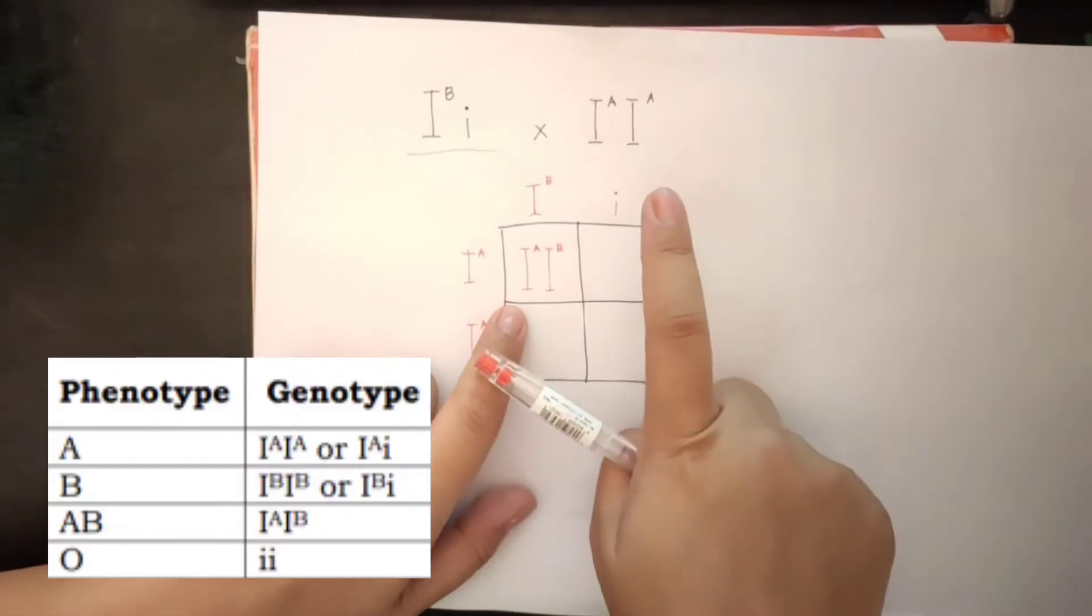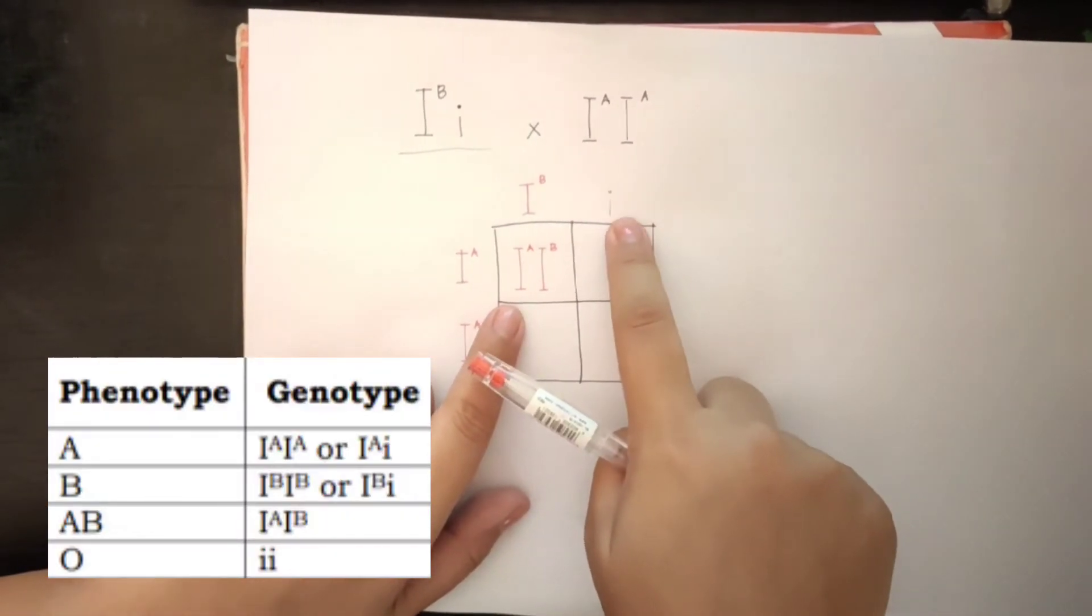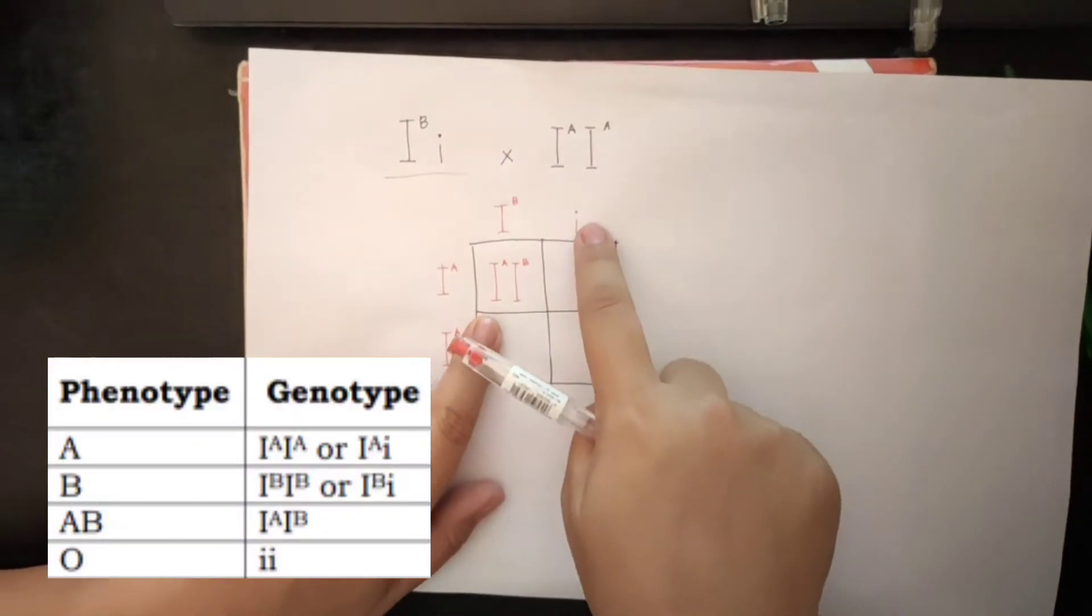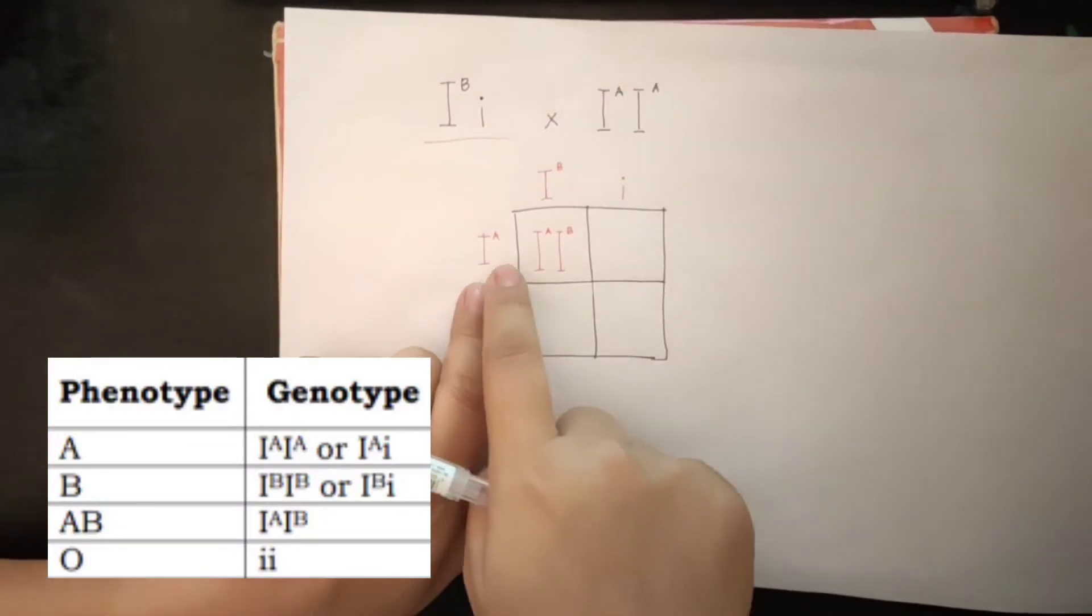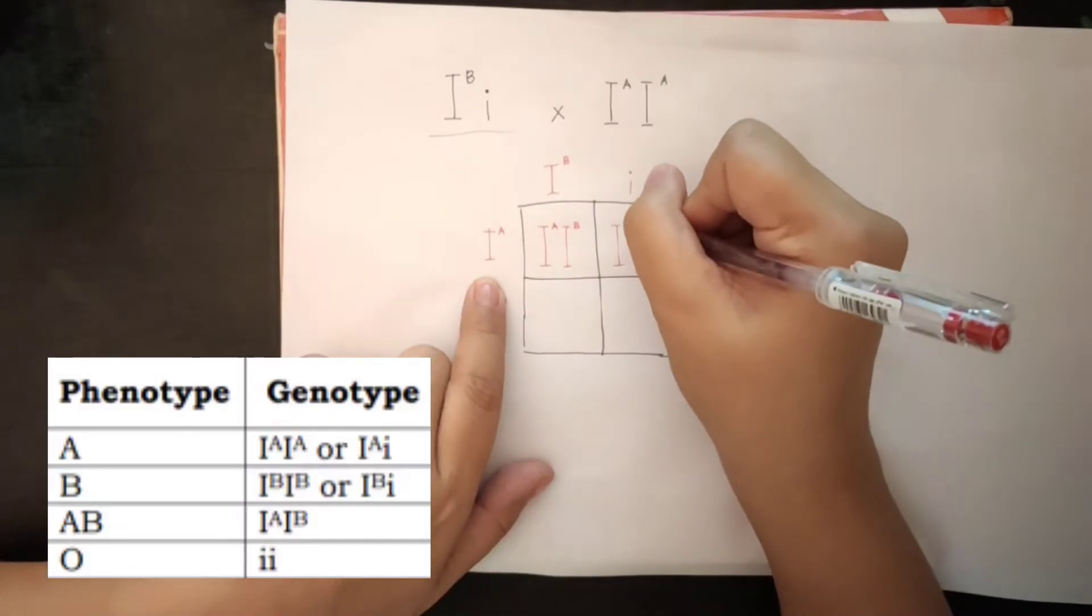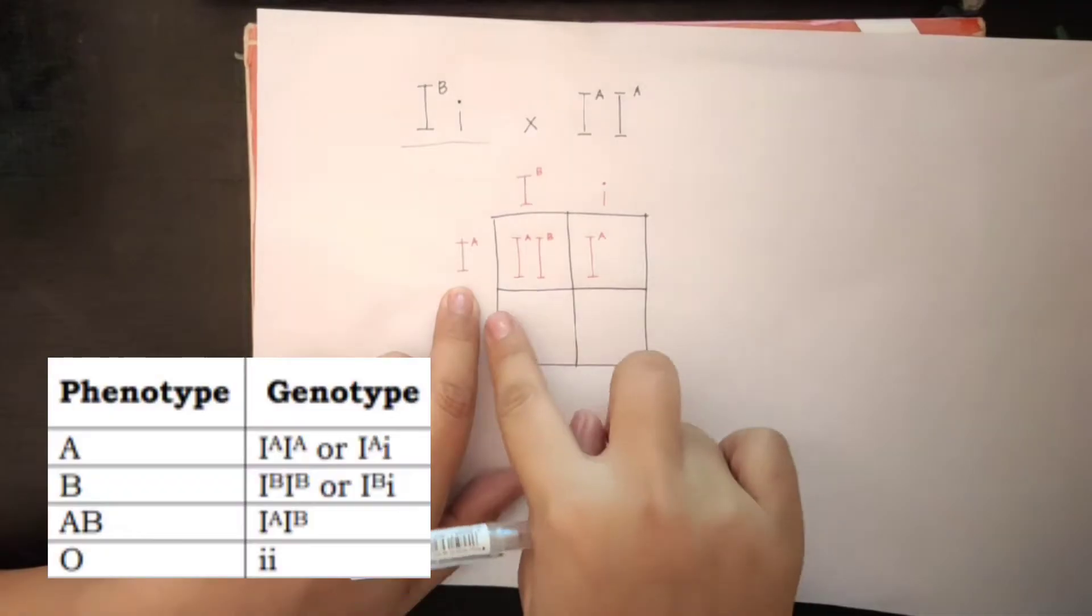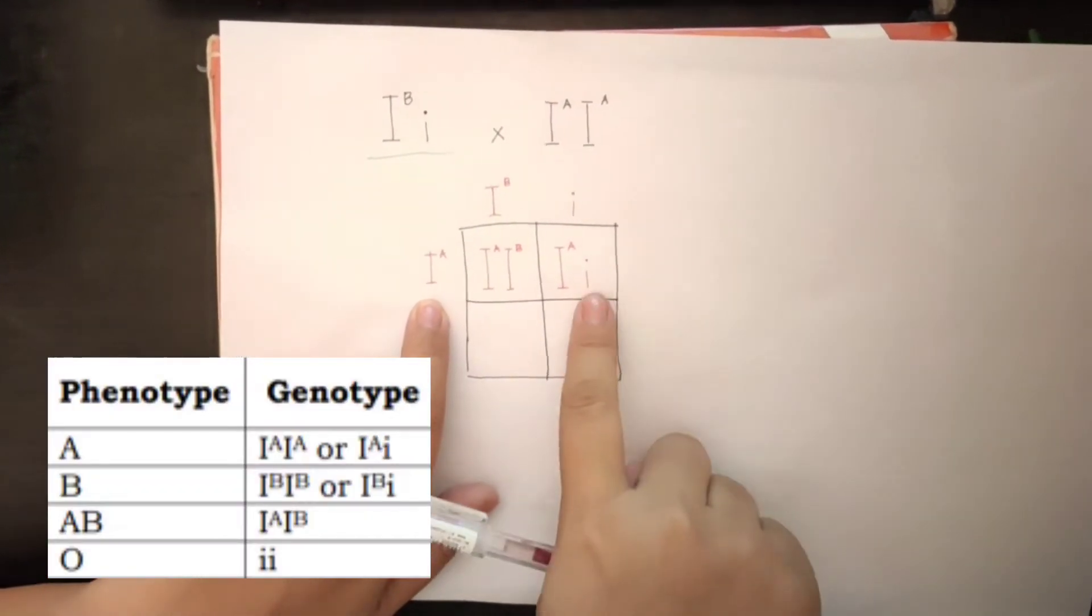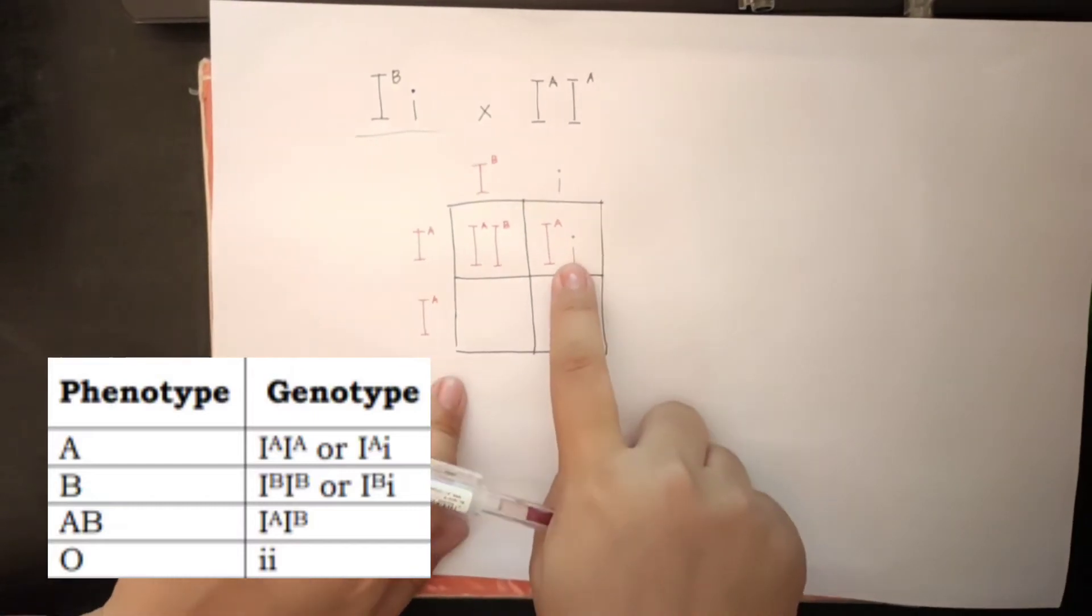Now, in this one, we are going to follow also the rule that we are going to write first the dominant allele. Now, for this one, the dominant allele is the blood type A. And the genotype for that allele is this one. Then, write the small letter or the recessive. And this is for the allele of blood type O.